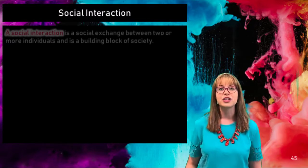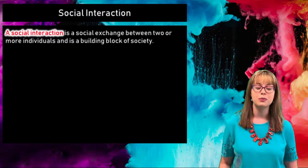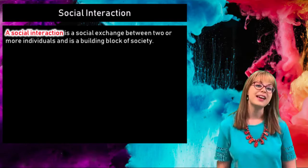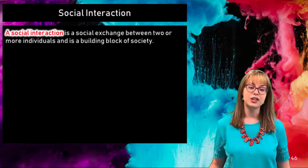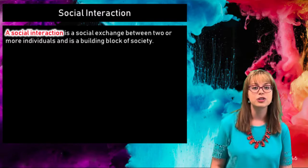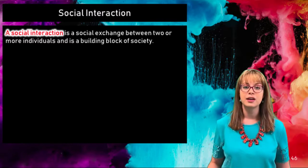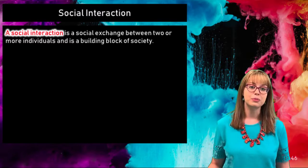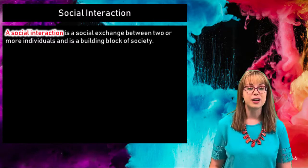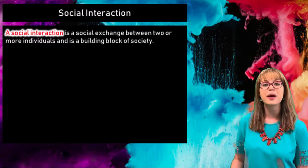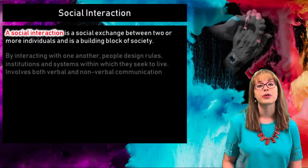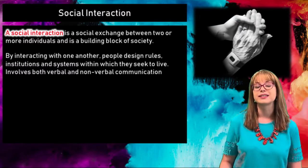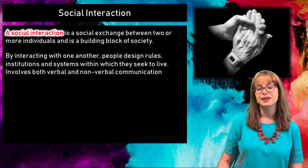A social interaction is an exchange between two or more individuals and is a building block for society. Social interaction is how we form relationships, transmit culture, achieve goals, and it's also a place where we experience conflict. By interacting with other people we decide on the rules of society, how to get things done, the design of society.